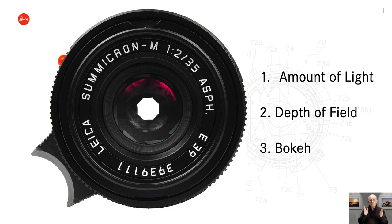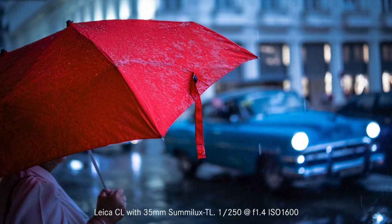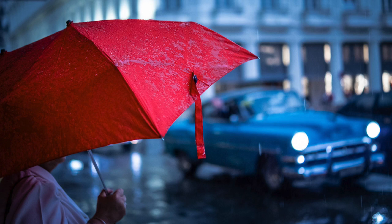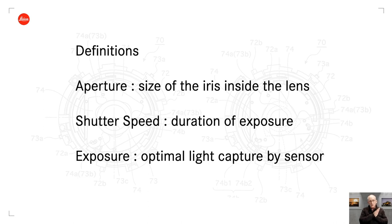Think back to the advertising picture — a red umbrella in Havana, Cuba, with a car in the background. I used a specific depth of field by using the widest aperture the lens was capable of, which was f/1.4. That separated the umbrella very strongly from the background. The aperture is physically the size of that iris inside the lens — a mechanism with metal leaves that interlock to give a variable hole size.